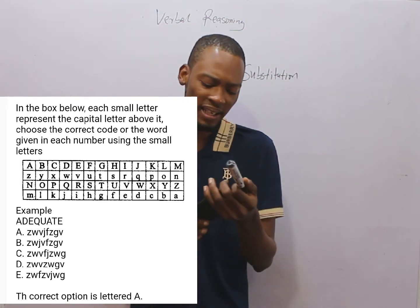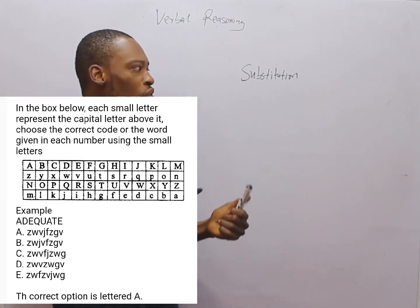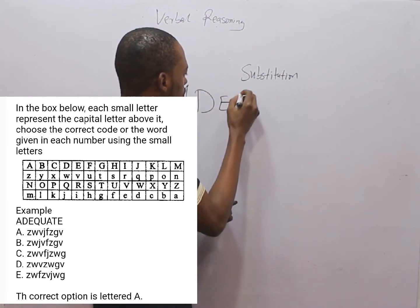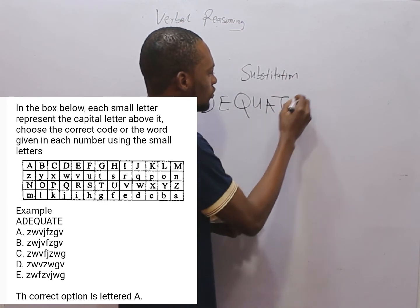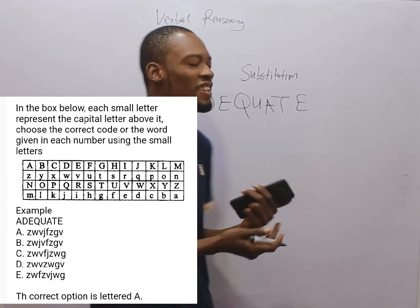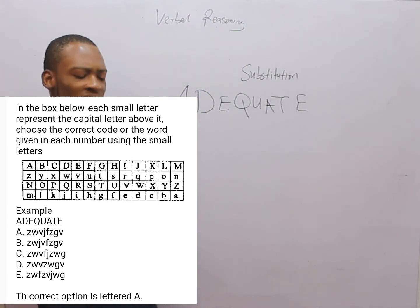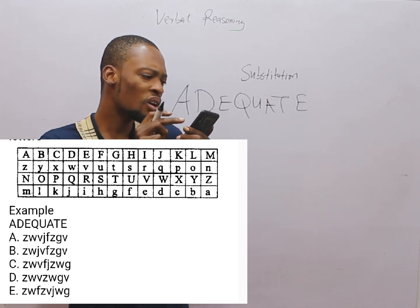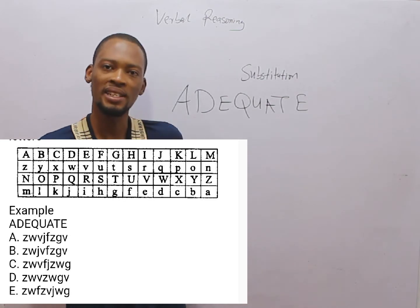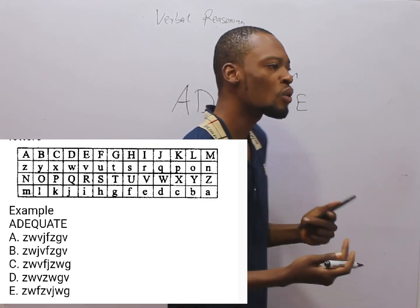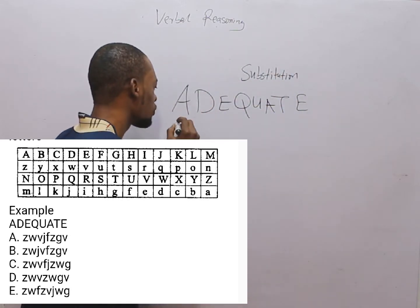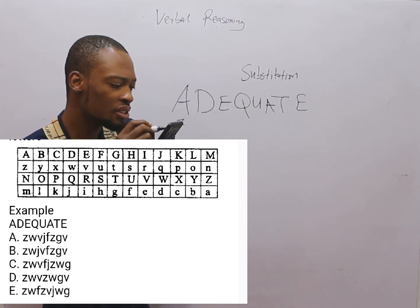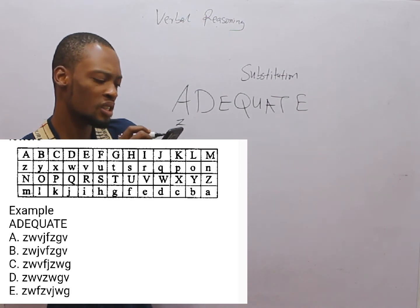When you see a capital letter word, you will be asked to replace it with the equivalent small letter word. Let's see how to do this — they gave us 'ADEQUATE.' Looking at the table, you go to capital letter A; below capital letter A what do you have? Small z. So capital A equals small z — we put small z here. The next letter is capital D; what is under capital D in the table? It is small w. So we write w.